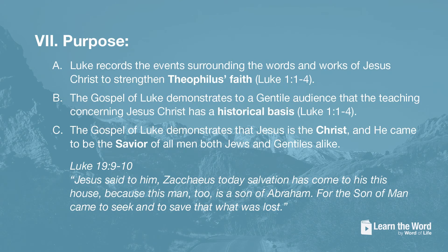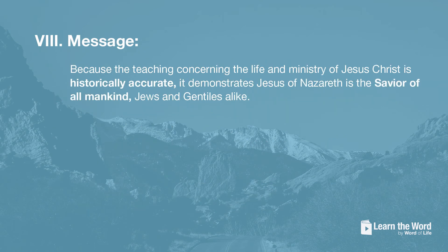Look with me in Luke 19:9-10, a key verse that helps us understand the message of the book of Luke. Jesus is speaking to Zacchaeus: 'Today salvation has come to this house because this man, too, is a son of Abraham. For the Son of Man came to seek and to save that which was lost.' So a good message statement for the Gospel of Luke is: Because the teaching concerning the life and ministry of Jesus Christ is historically accurate, it demonstrates that Jesus of Nazareth is the Savior of all mankind — Jews and Gentiles alike.